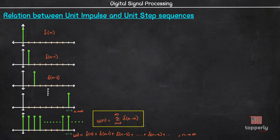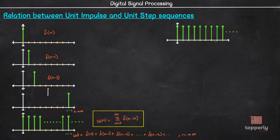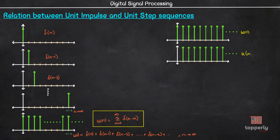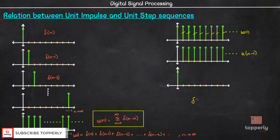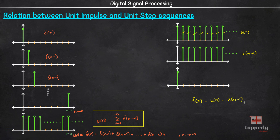There is also one more way to relate unit impulse and unit step sequences. Consider the unit step sequence u(n), and also consider u(n-1), the unit step delayed by one sample. If you subtract u(n-1) from u(n), all the overlapping instances become 0 and you get a new sequence which is none other than the unit impulse. Therefore δ(n) = u(n) - u(n-1). This is another way to relate unit impulse and unit step sequences.